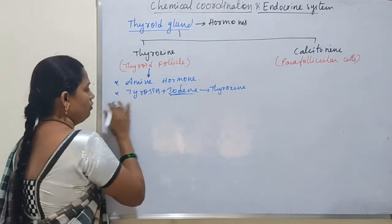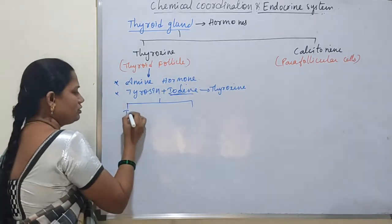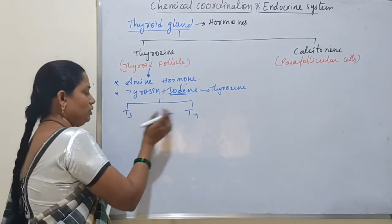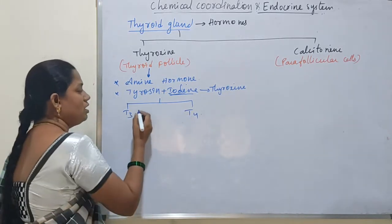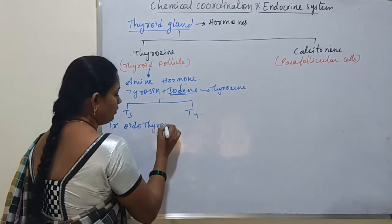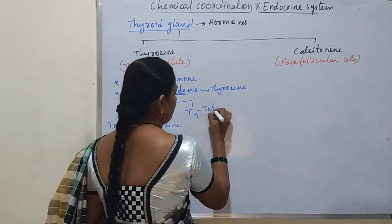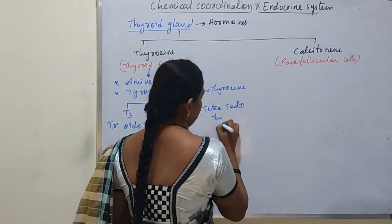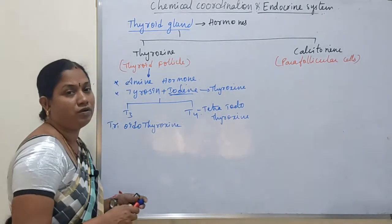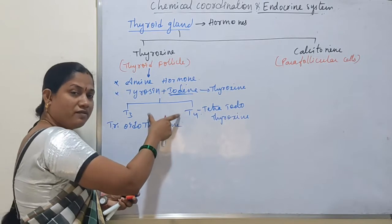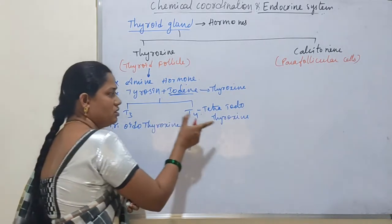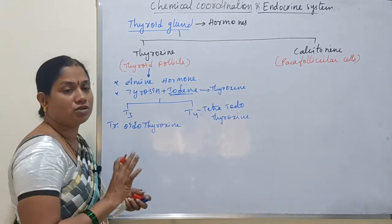Thyroxine exists in two forms: T3 and T4. T3 means triiodothyroxine, which has three iodine molecules. T4 means tetraiodothyroxine, which has four iodine molecules. Both forms show the same functions; only the number of iodine molecules differs.